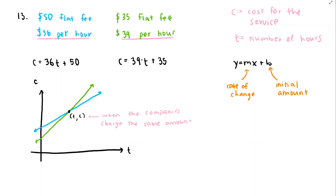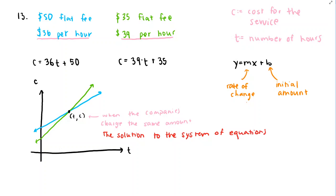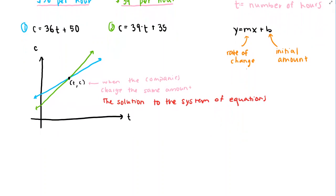To find when the companies charge the same amount, we find the point of intersection, which is the solution to the system of equations. We can use substitution or elimination. Since C in the second equation equals 39T + 35, I can substitute that into the first equation: 39T + 35 = 36T + 50.